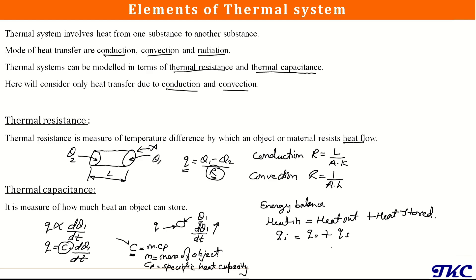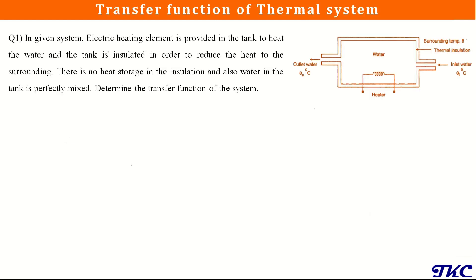Let's take an example to understand this concept. In a given system, an electric heating element is provided in a tank to heat the water inside. The tank is insulated to reduce heat loss to the surroundings. There is no heat storage in the insulation, and the water in the tank is perfectly mixed, giving a uniform temperature inside the tank.